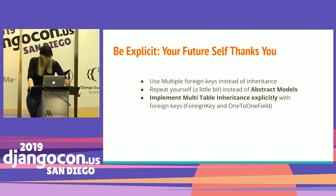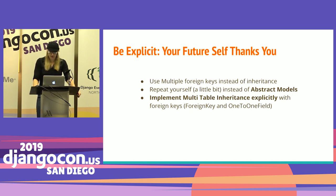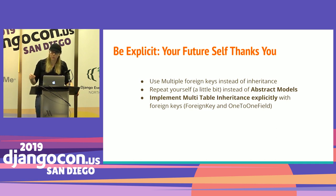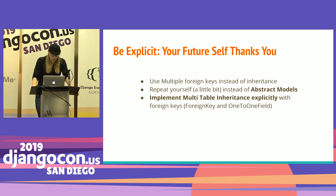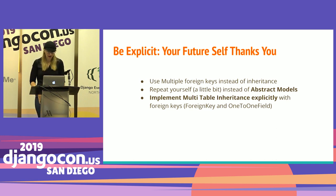Sometimes it's good to be explicit. You can use multiple foreign keys instead of inheritance like proxy models, or if you only have one field to repeat you can just add it to multiple models. With multiple table inheritance, you won't get the bells and whistles Django provides, but it's a lot more explicit to implement it as one-to-one fields — everyone in your organization knows what's going on, and you'll recognize that when you add a subclass your performance will be degraded.